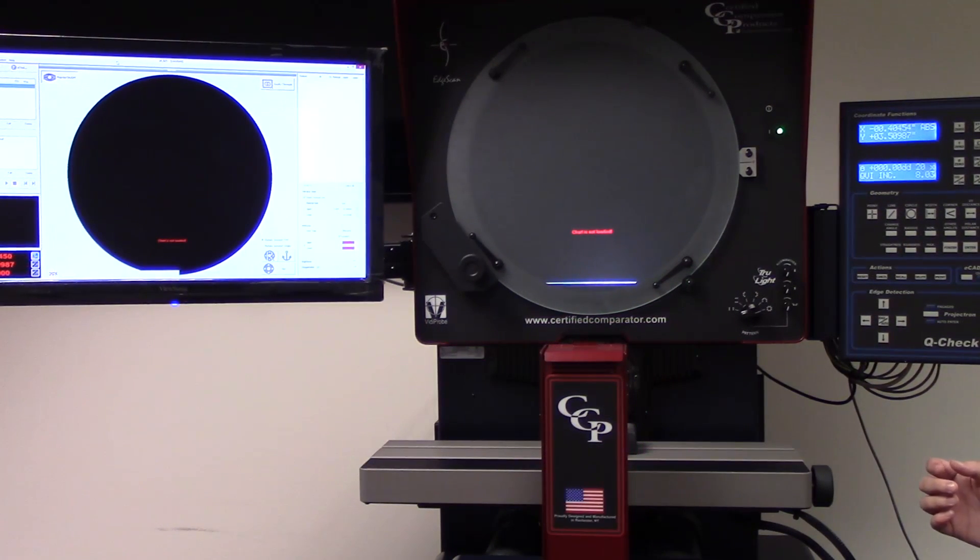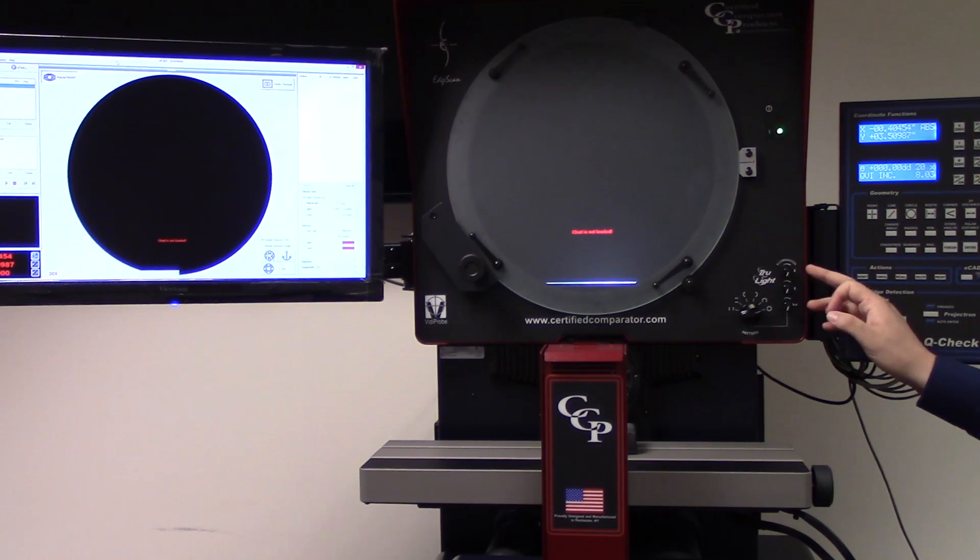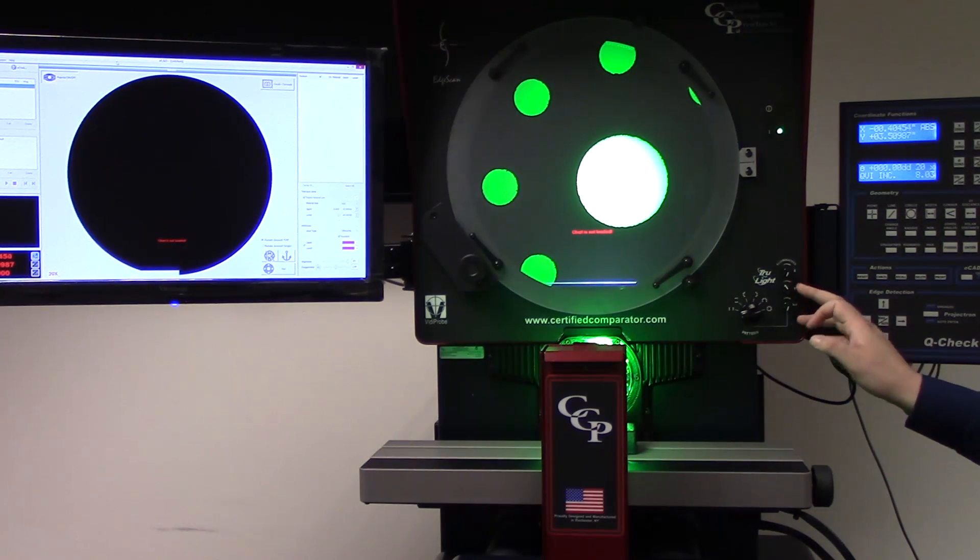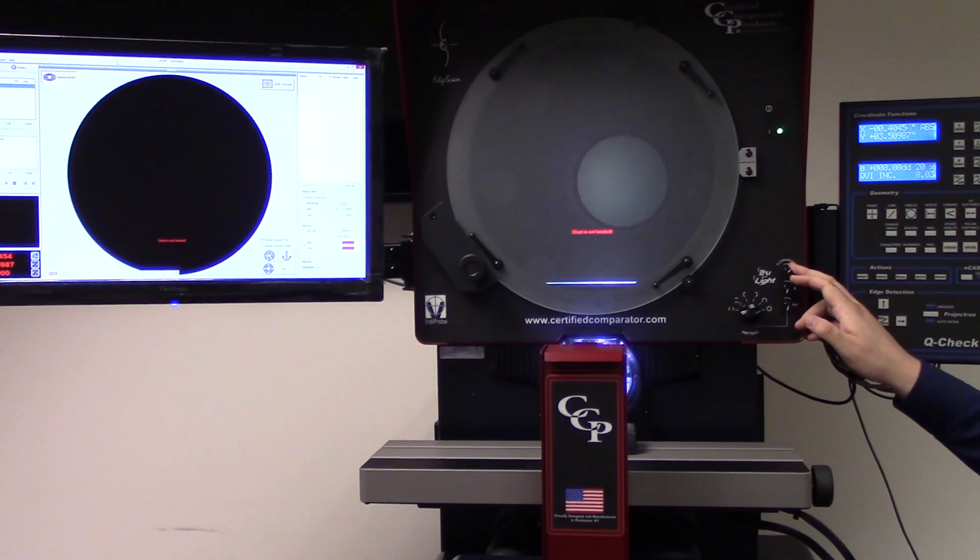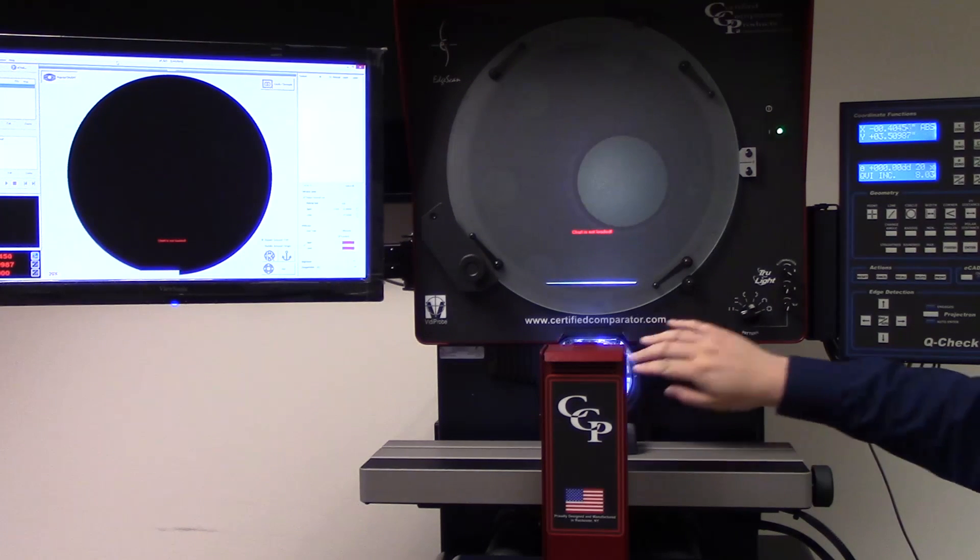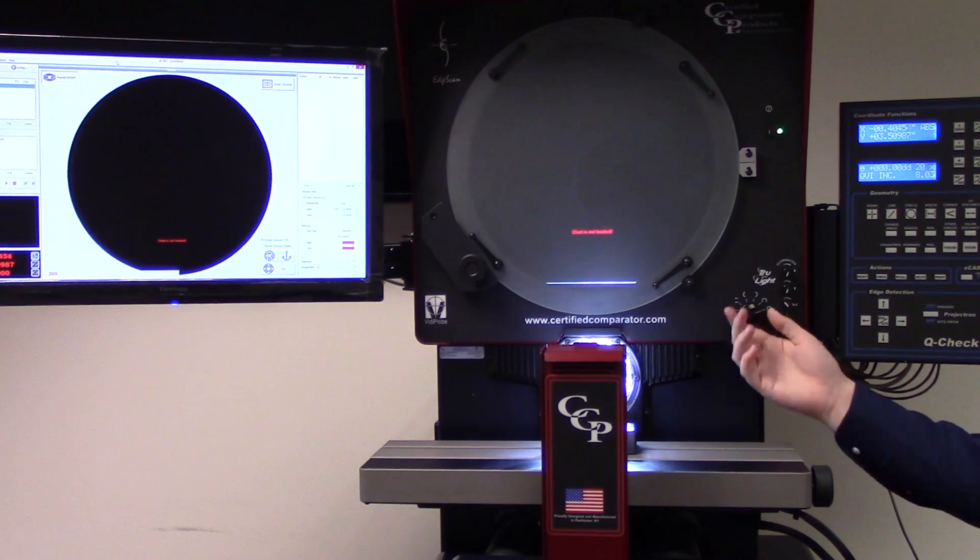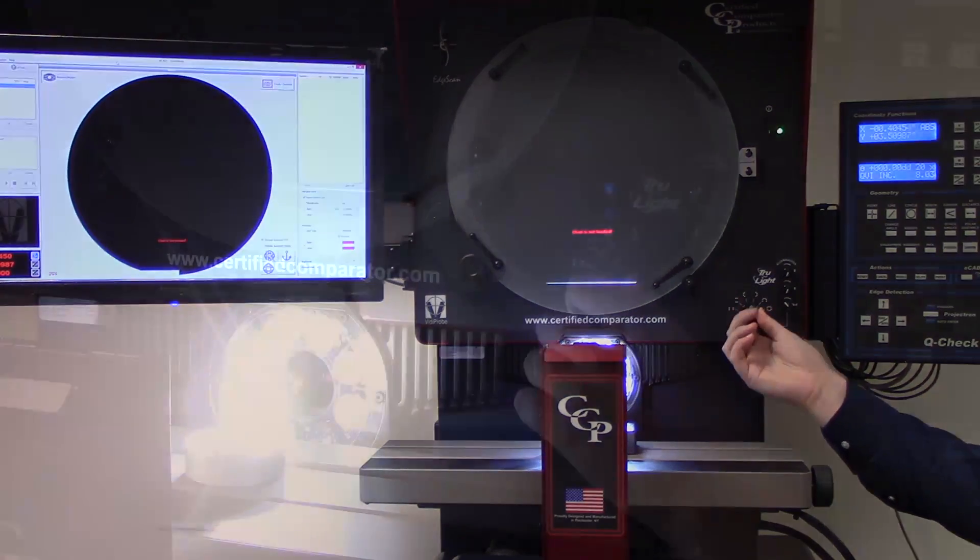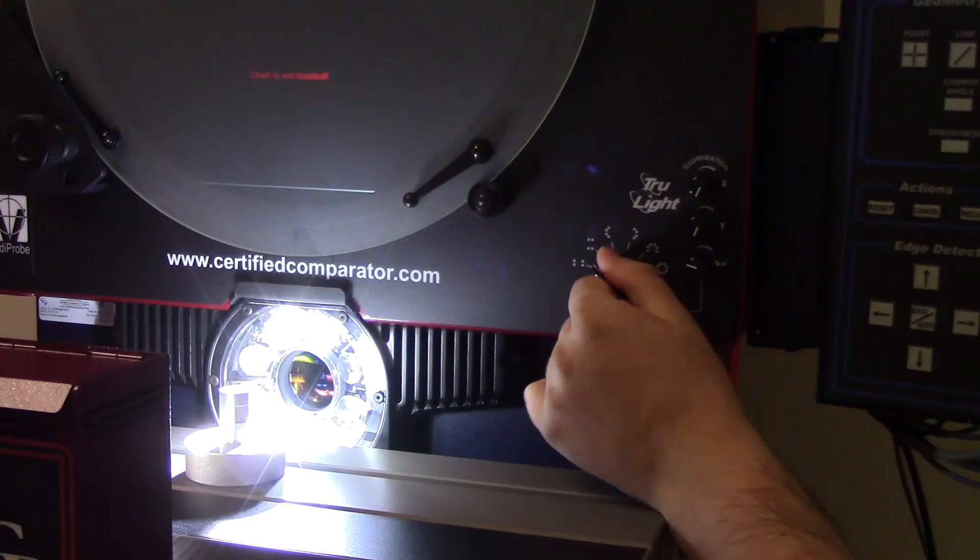This unit also comes equipped with three different light sources. We have traditional back lighting which comes from the lamp house, through the lens light which will come from the front which is good for checking blind holes, and then we have a ring light with programmable configurations to check different chamfers on the surface of your part.